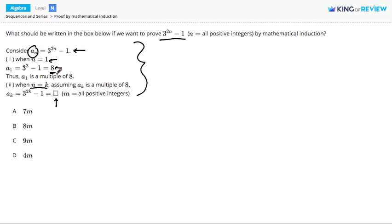So in that case, a to the k, which we know is defined as 3 to the 2k minus 1, equals something where we know it's a multiple of 8.